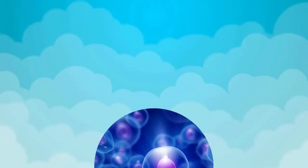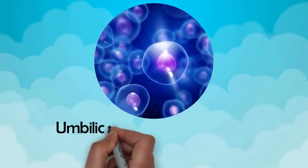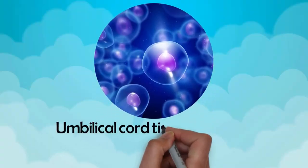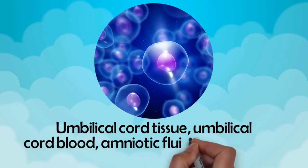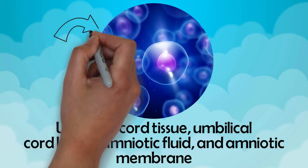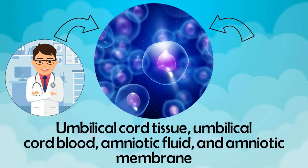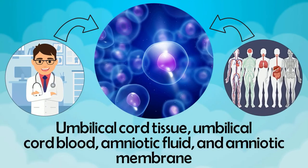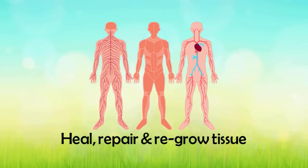The types of regenerative medicine used in this office are regenerative tissue such as umbilical cord tissue, umbilical cord blood, amniotic fluid, and amniotic membrane. These types of regenerative tissues are a next-generation, non-surgical, minimally invasive treatment that uses the human body's own ability to heal, repair, and regrow tissue.